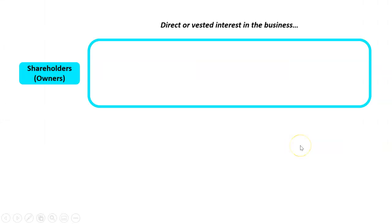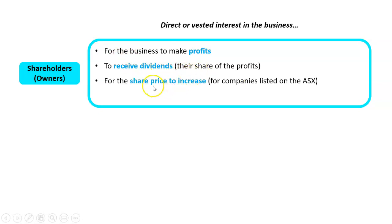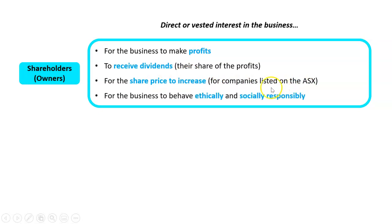So let's summarize what shareholders want. This is a topic about stakeholders — stakeholders have a direct or vested interest in the business. Shareholders want: for the business to make profits; to receive dividends, which is their share of the profits; and for the share price to increase, particularly for companies on the stock exchange — essentially to make a capital gain.